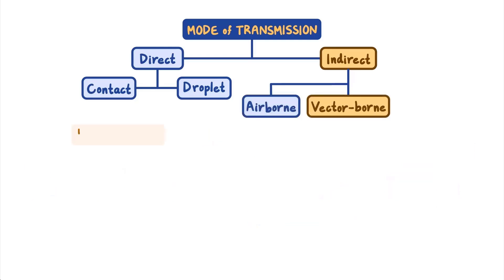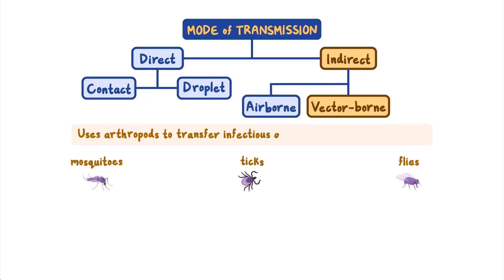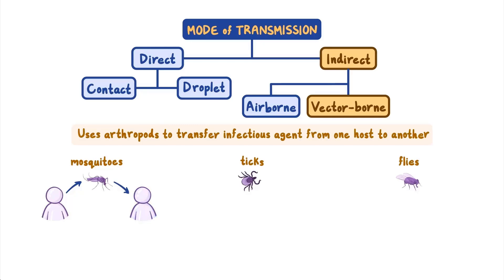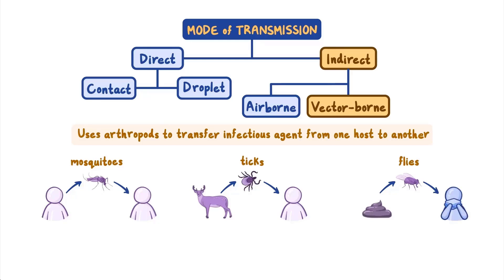Indirect vector-borne transmission uses arthropods such as mosquitoes, ticks, or flies to transfer the infectious agent from one host to another. For example, mosquitoes become infected with the malaria parasite from taking a blood meal from an infected person. After a period of parasite development, mosquitoes then spread the agent to the next host through a bite. Ticks can transmit the agent that causes Lyme disease from an infected animal reservoir to a human in much the same way. Or, a fly can pick up an infectious agent on its feet by walking on a contaminated surface and carry it to a previously uncontaminated surface such as uncovered food at a picnic.